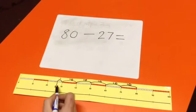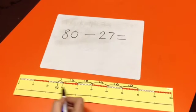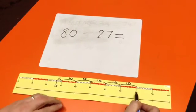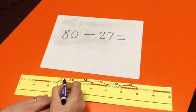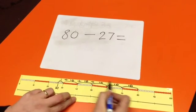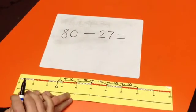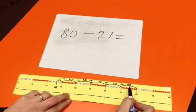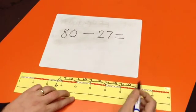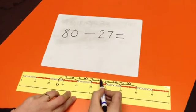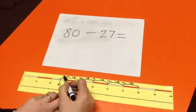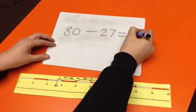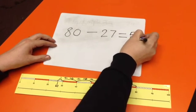We have now jumped from our starting number to our highest number. When we add all these together, we can count to work out our final total number. 10, 20, 30, 40, 50, and three more makes 53.